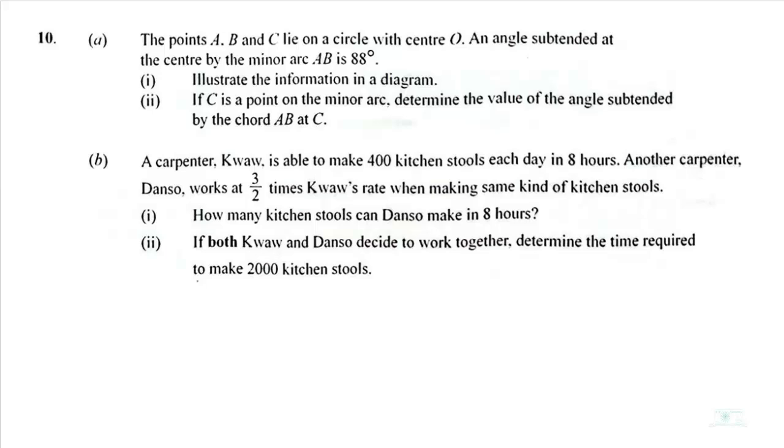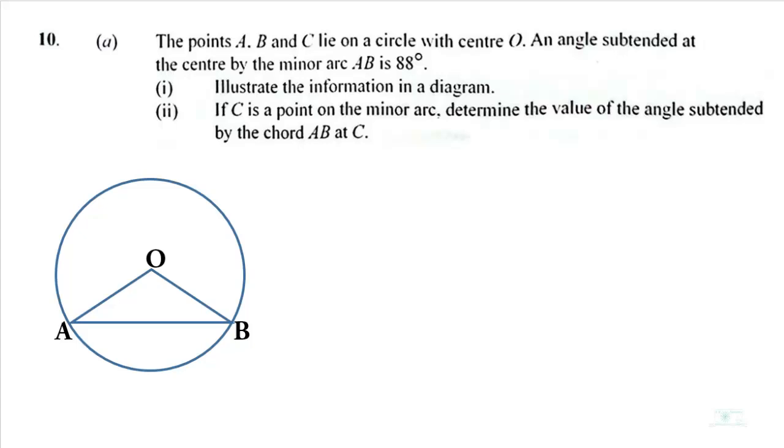So the information illustrated in the diagram is this. Then we are told that if C is a point on the minor arc, determine the value of the angle subtended by the chord AB at C. So our final diagram will look like this.